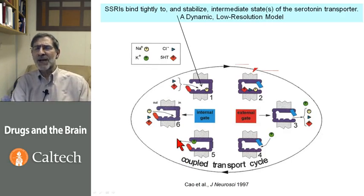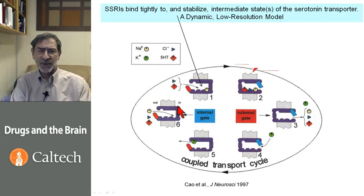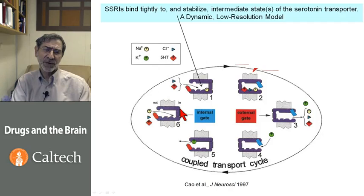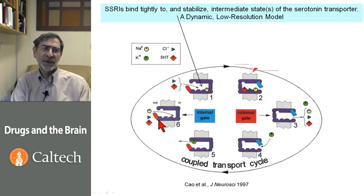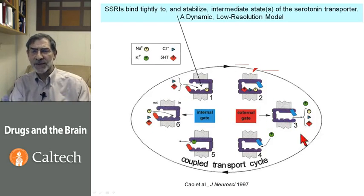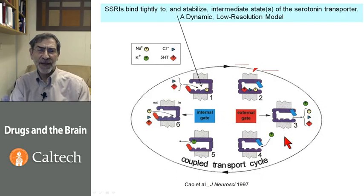Another way to state the alternating access model is that an ion-coupled transporter looks a bit like an ion channel but with gates at both ends — an internal gate and an external gate. The gates open when molecules are bound in one place or another; then the other gate opens. So we follow a cycle of substrate binding, gates opening and closing, and unbinding.